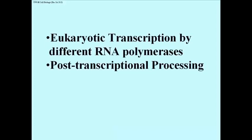Eukaryotic cells use different RNA polymerases to make different RNAs, and then process their transcripts in several ways.